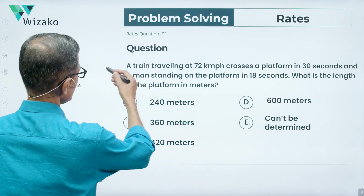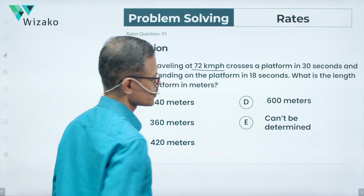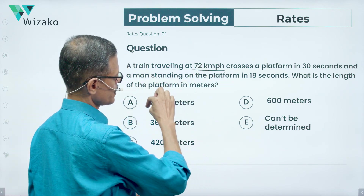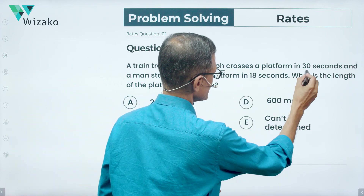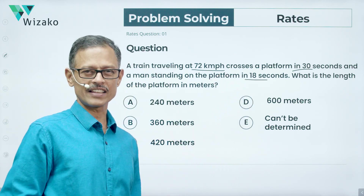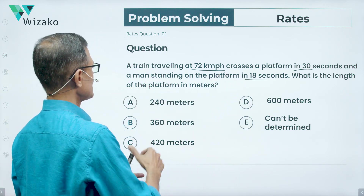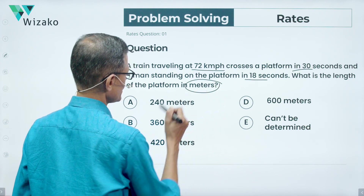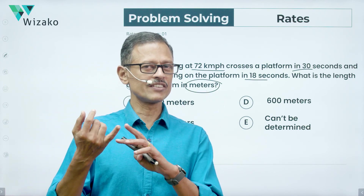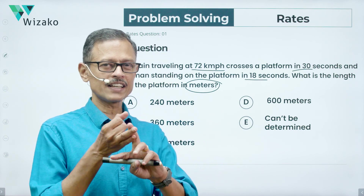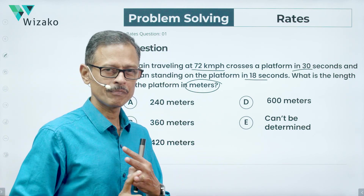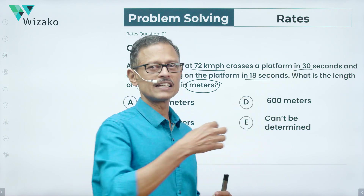Let's get started. A train traveling at 72 kilometers per hour crosses a platform in 30 seconds and a man standing on the platform in 18 seconds. What is the length of the platform in meters? Quickly notice that there is a mix of units here — the speed is given in kilometers per hour, the length is asked in meters, and the time is given in seconds.